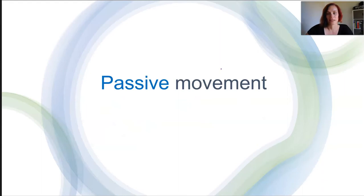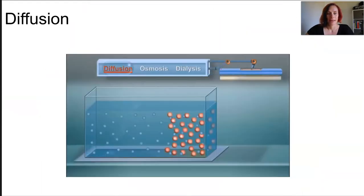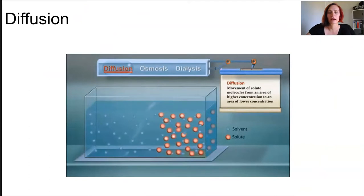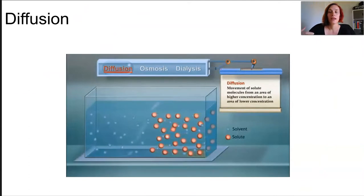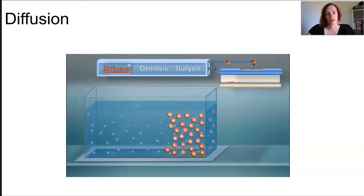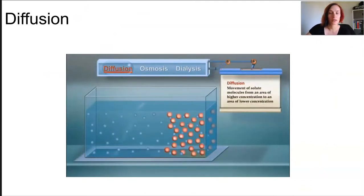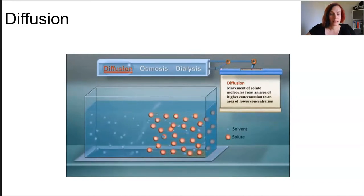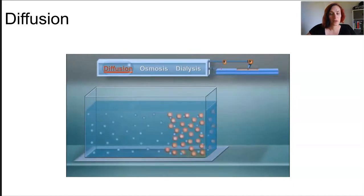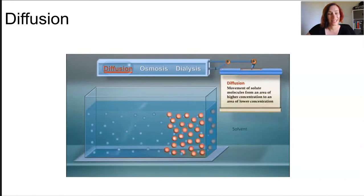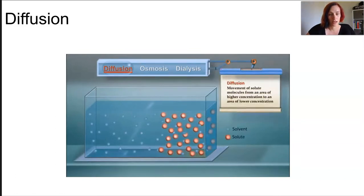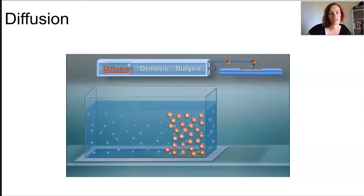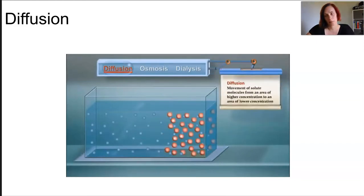Let's start talking about passive transport. The first type is diffusion — the spreading out of particles with the concentration gradient, from areas of high to low concentration. It exactly follows the concentration gradient. You can see that the solute, the red blobs, within the blue solvent molecules are spreading out exactly as you would imagine, like that perfume example.